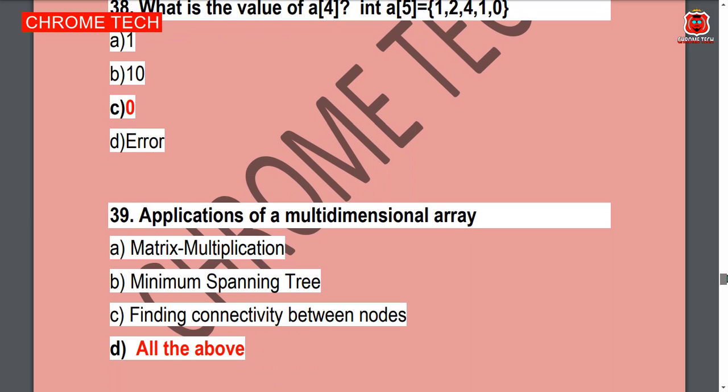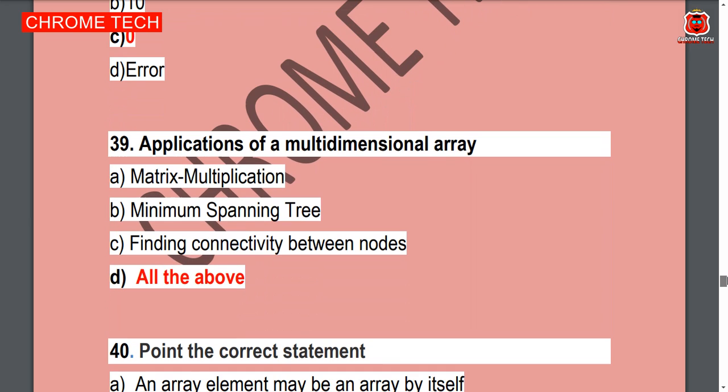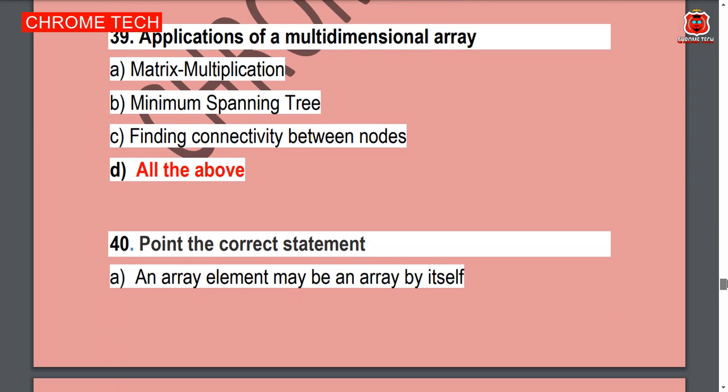Next question: Application of multi-dimensional arrays. Option D — all of the above is the correct answer — including matrix multiplication, minimum spanning tree, and finding connectivity between nodes.